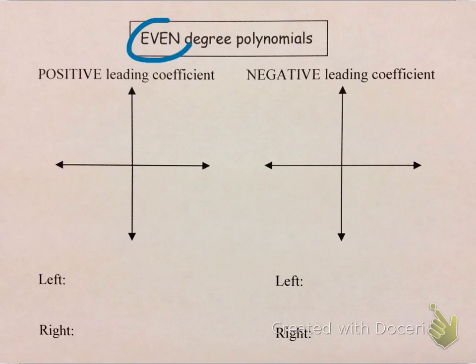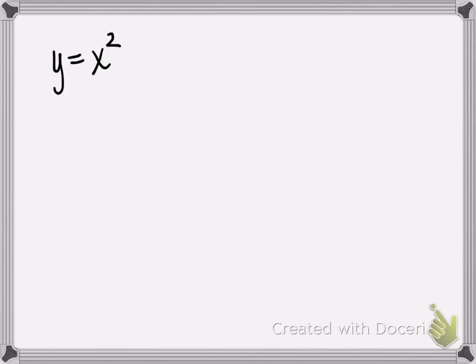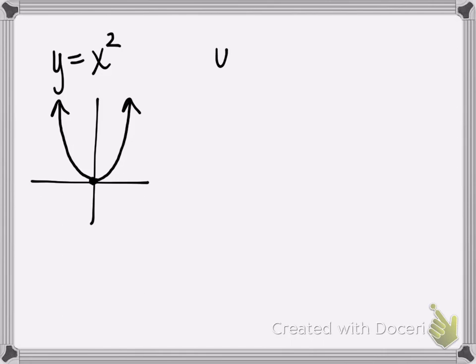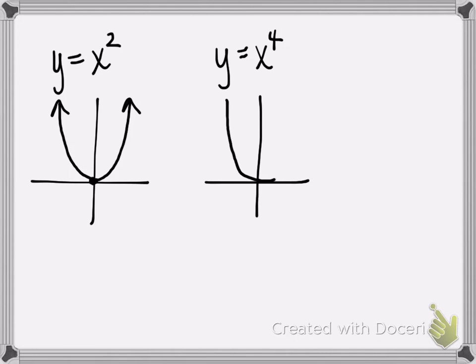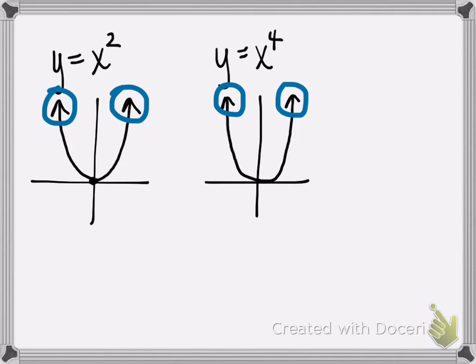Now let's look at even-degree polynomials. Let's think about some we've already studied. For example, y equals x squared — we know that's a parabola with vertex at (0, 0) that opens up. We've also looked at y equals x to the fourth, a higher even power, which is also a u-shaped graph, just a little flatter near the origin. It's important to notice that the ends of both graphs point in the same direction, because they are even-degree polynomials.